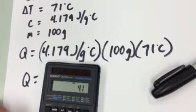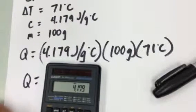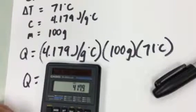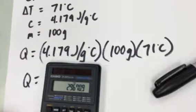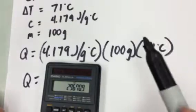So we got 4.179 times 100 times 71. And that gives us this huge number, 29,670.9. I'll round that up to 29,671.